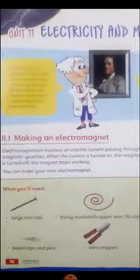Electromagnetism involves an electric current passing through something with magnetic qualities. When the current is turned on, the magnet works. When the current is turned off, the magnet stops working.